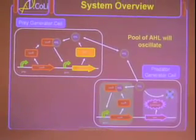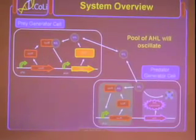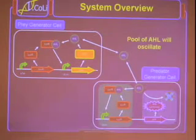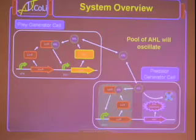So now if we look at the system overview, we've got our prey generator cell. These proteins remain inside the cell at all times. And only AHL can diffuse between the cells. So we have this extracellular pool of AHL, which will oscillate.